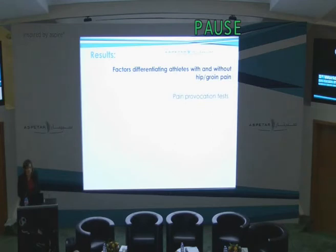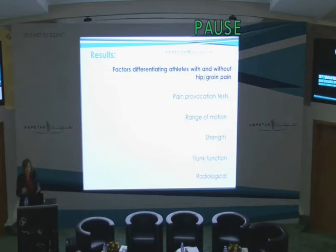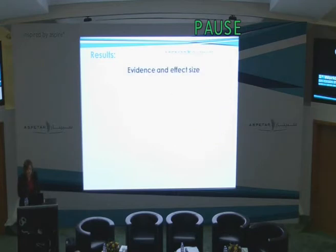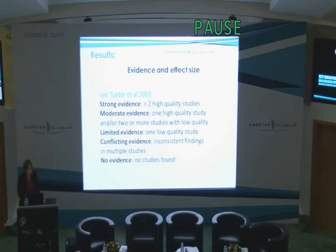In terms of methodological quality, we rated a high-quality study as 12 out of 16 for the modified Downs and Black Scale, which is around 75%. We had six moderate-quality studies, 10 to 12 out of 16, and one low-quality study which we still included. We had five main categories of factors: pain provocation tests, range of motion, strength, trunk function, and radiological factors. We used the Van Tilda definition of strong, moderate, limited, conflicting, and no evidence, and for effect sizes we used Cohen's D categories.